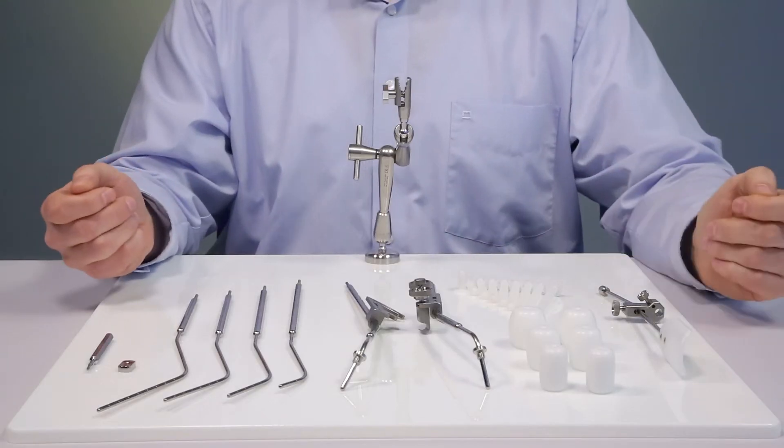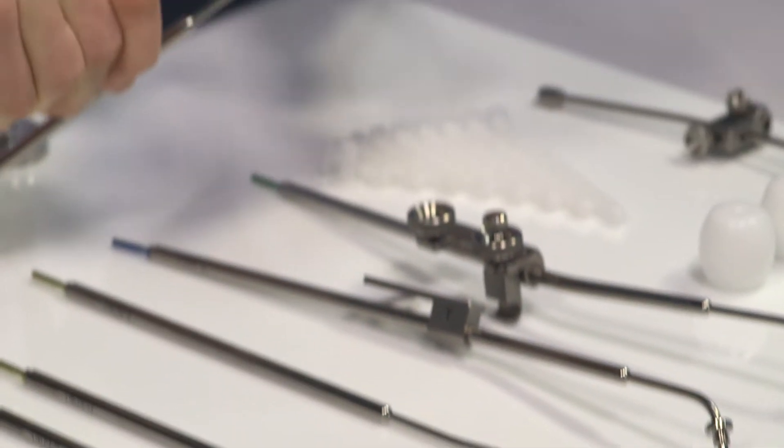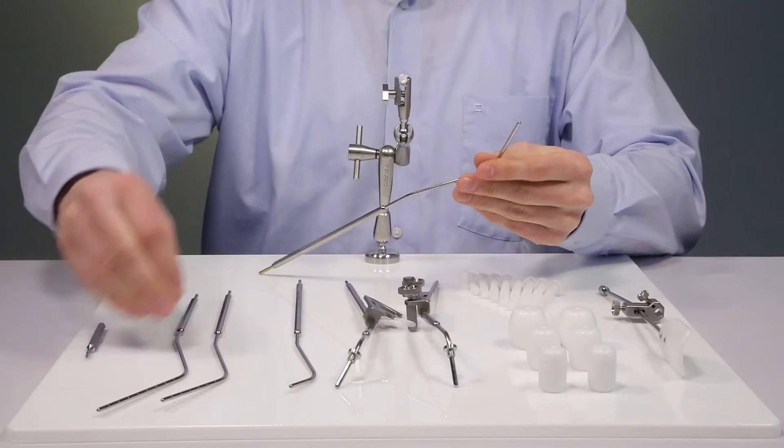Now let's start with the assembly. I select an IU tube and fix the cervical stop.